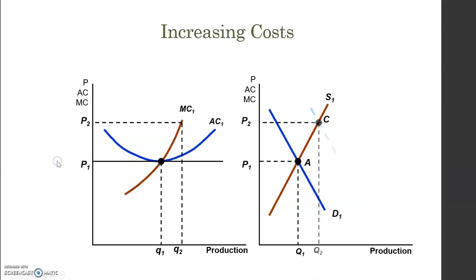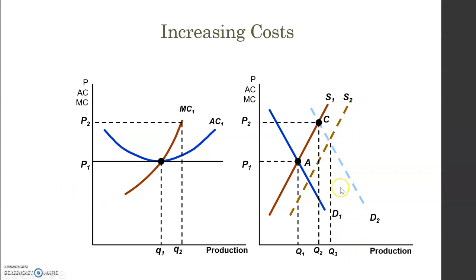These positive profits attract other companies to the market. The supply curve shifts to the right as more producers enter, and we find a new equilibrium point where supply and demand cross at quantity Q3.